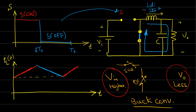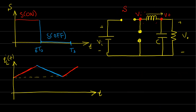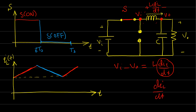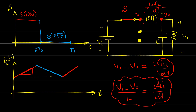Let's go in depth on the behavior of the inductor current. When the switch is on, the voltage applied on the inductor is L·di/dt = Vin − Vout. Therefore, the rate of change of current with respect to time is dil/dt = (Vin − Vout) / L. From this equation we can find the positive slope of the inductor current when the switch is on, which is (Vin − Vout) / L.